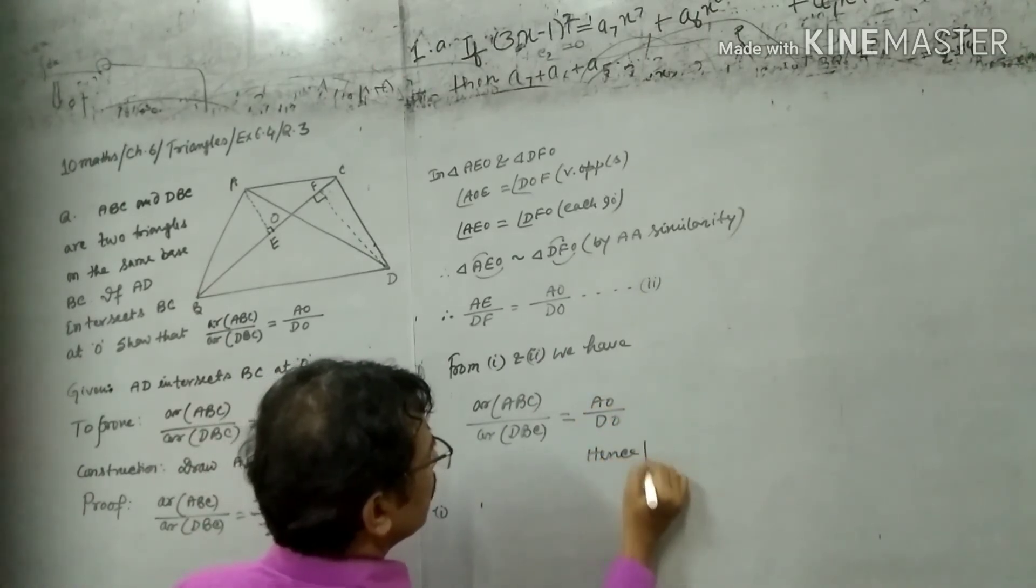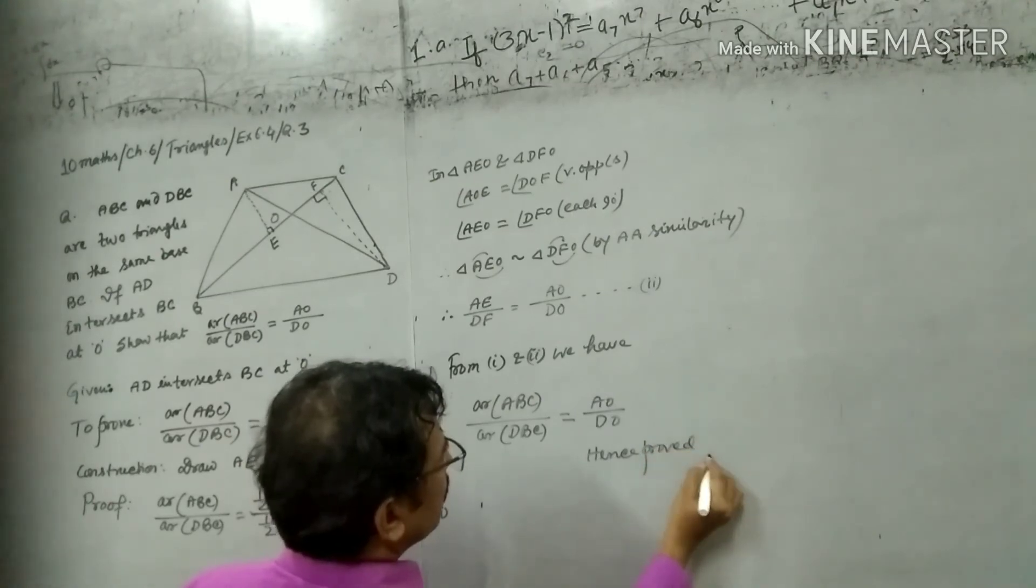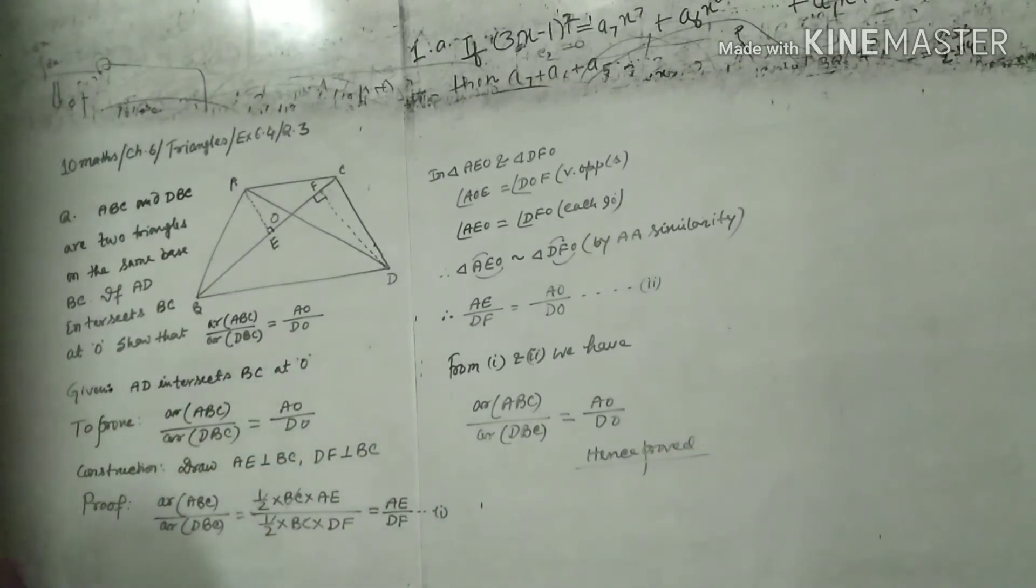This is the proof. That means this particular portion, area ABC, half base into height. Clear?